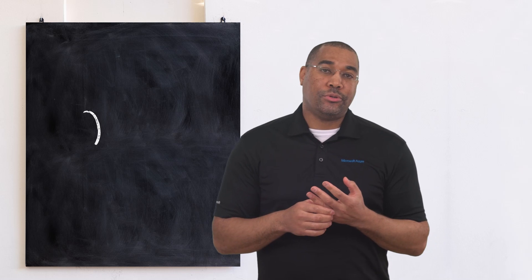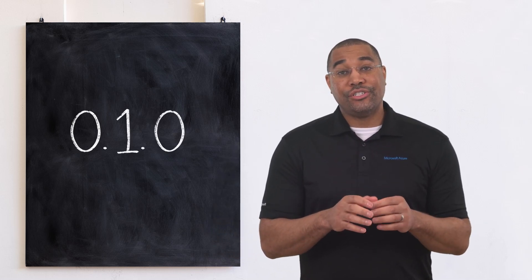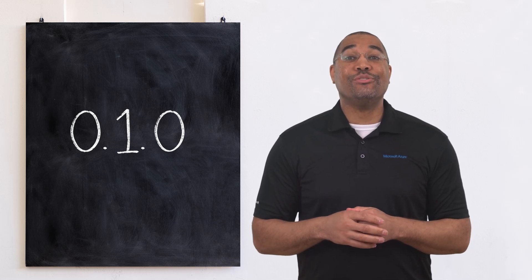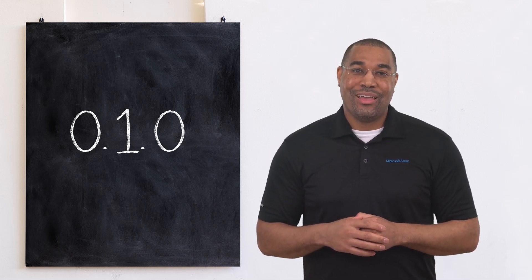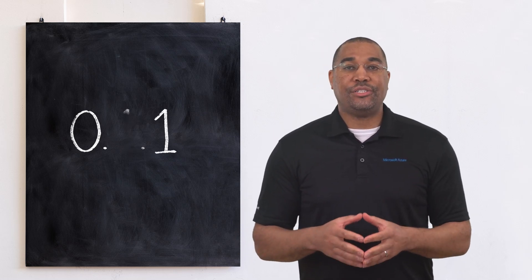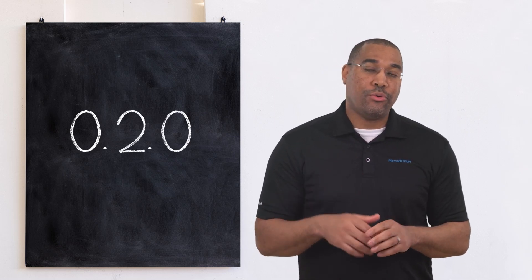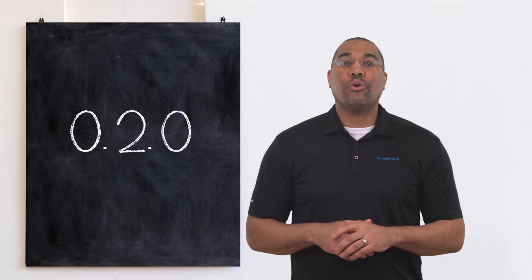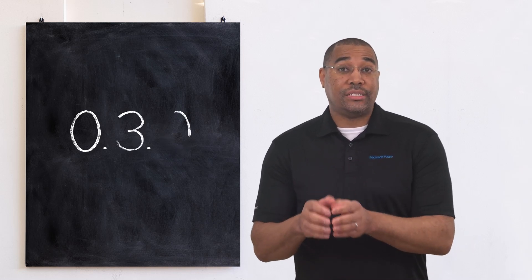Let's work through an example, starting with version 0.1.0. Having a major version of 0 signifies initial development, and that anything may change at any time. Every release should have a unique version. This is important so that when users provide you feedback or bug reports, you can identify the exact version they were using. Let's assume we're on our third initial release, with version 0.3.0.